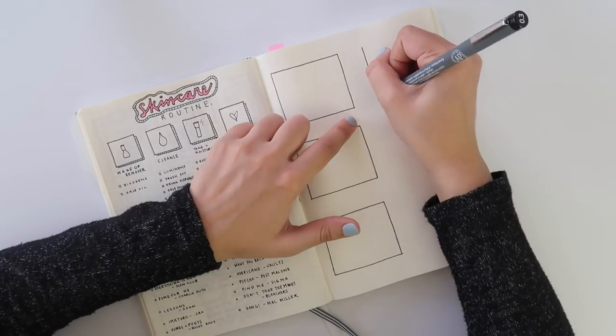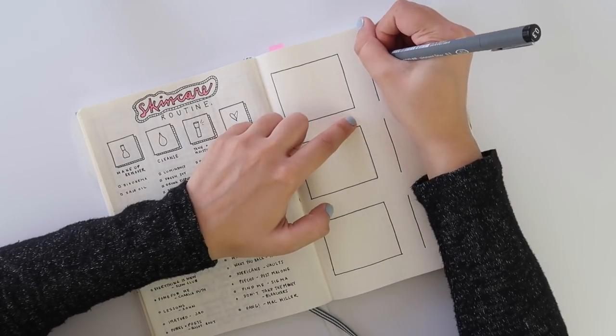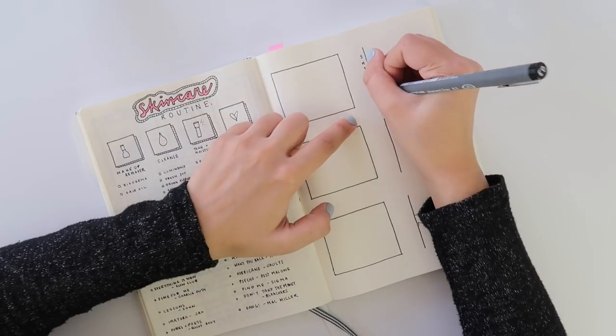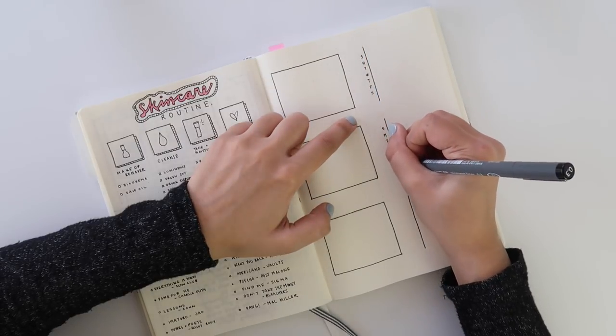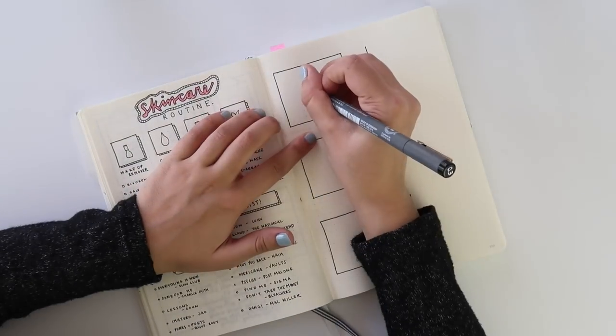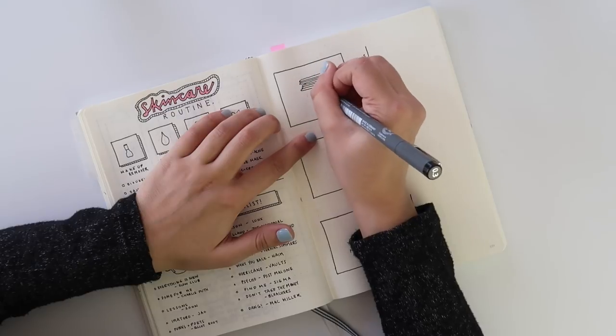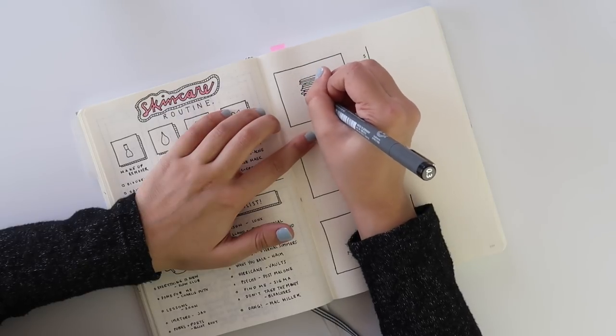On the next page, I recreated one of my favorite meal planner spreads but with an added twist by creating a little doodle for each meal. So for breakfast I did pancakes, for lunch I created a really pitiful looking sandwich, and for dinner I did pepperoni pizza.